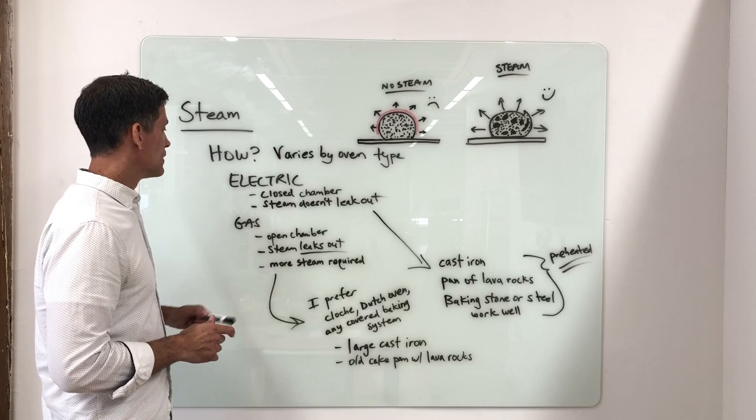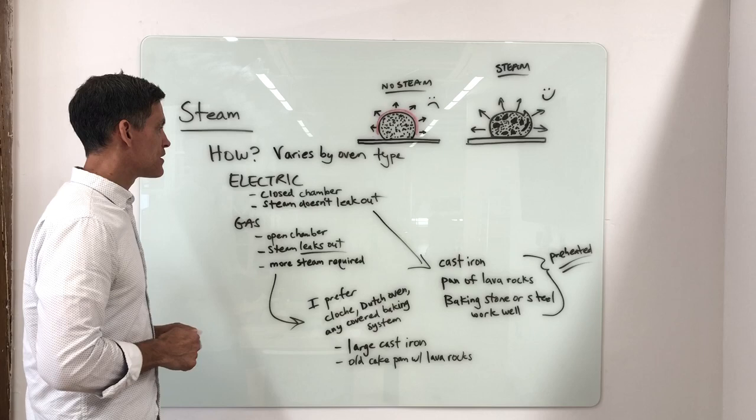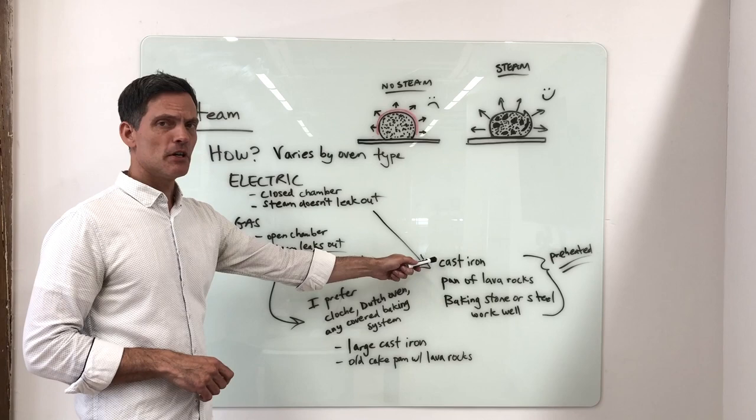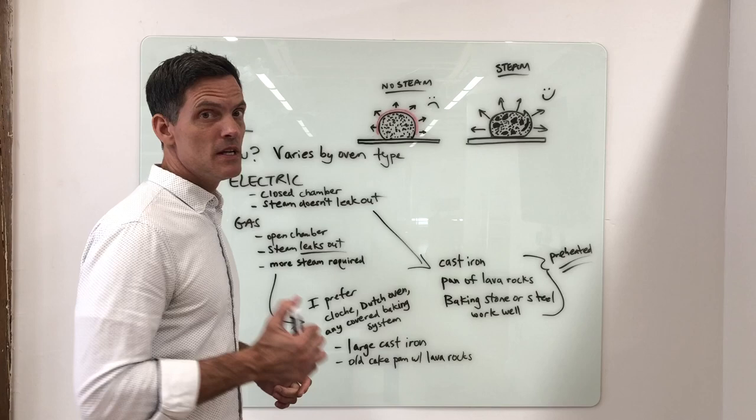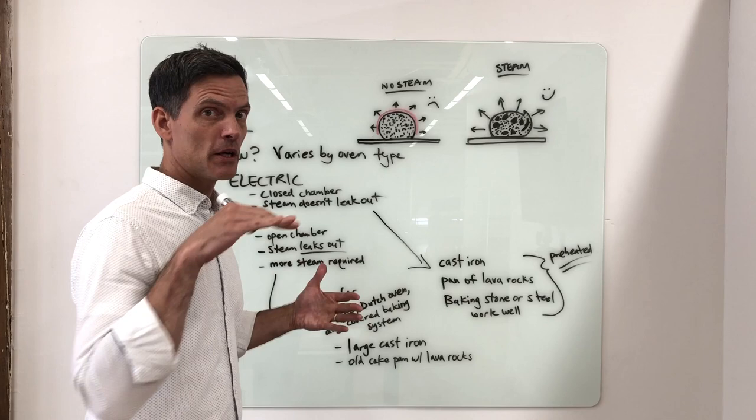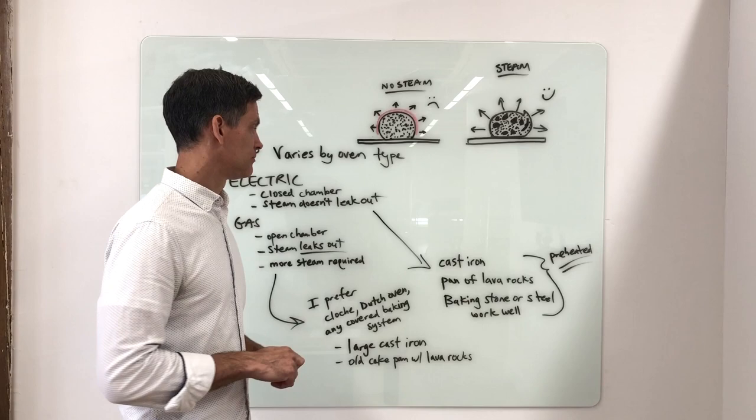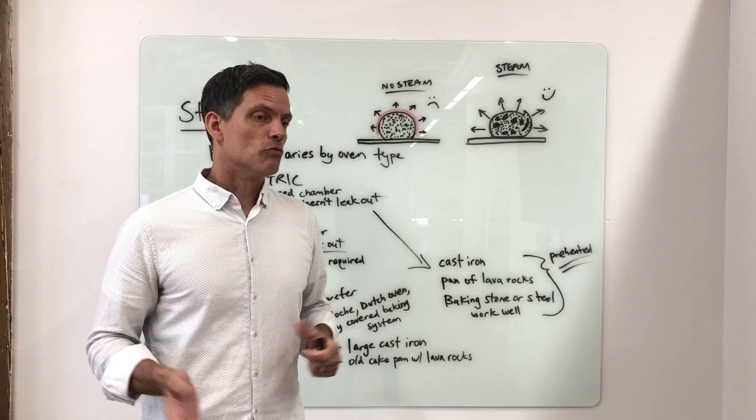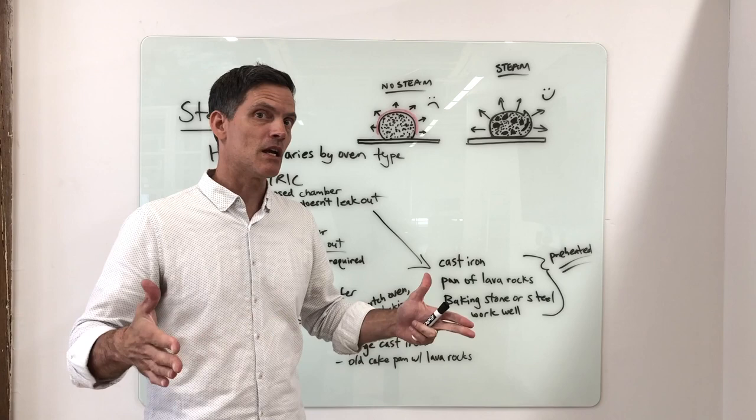So how are we going to address that? For an electric oven, I think a cast iron is good enough. A nice cast iron pan, 10 inches across, preheated while you preheat your baking stone or baking steel. The other thing you can do is use a pan of lava rocks. Go to your home supply store, buy a bag of lava rocks, rinse them, get an old nine by thirteen cake pan from the thrift store, and preheat those rocks the same way you would preheat your cast iron pan.